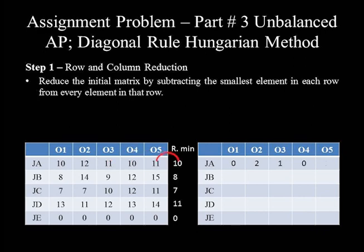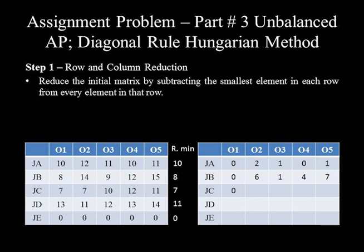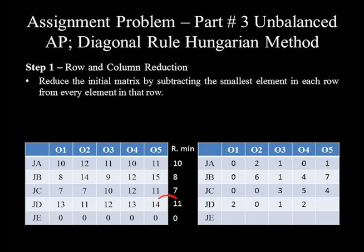In row 2: 8−8=0, 14−8=6, 9−8=1, 12−8=4, and 15−8=7. In row 3: 7−7=0, 7−7=0, 10−7=3, 12−7=5, 11−7=4. In row 4: 13−11=2, 11−11=0, 12−11=1, 13−11=2, and 14−11=3. The row 5 values will not be changed because the row 5 minimum is 0, and hence subtracting 0 will not change the values.